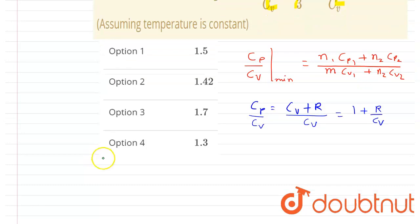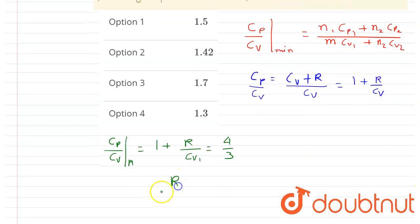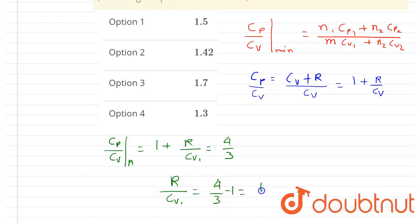For gas A, cp/cv = 1 + R/cv1 = 4/3. From this, R/cv1 = 4/3 − 1 = 1/3, which gives cv1 = 3R.